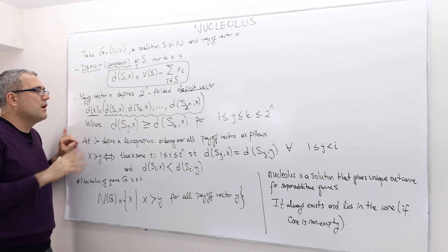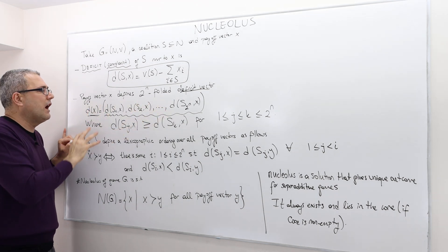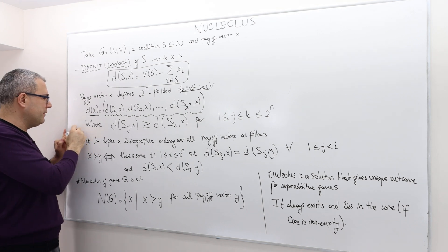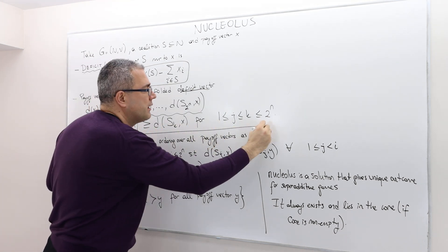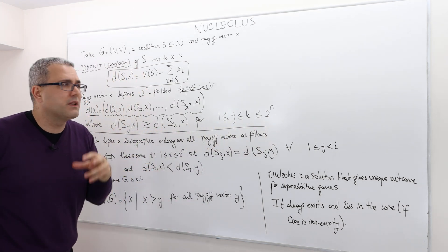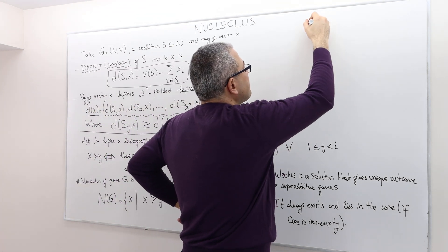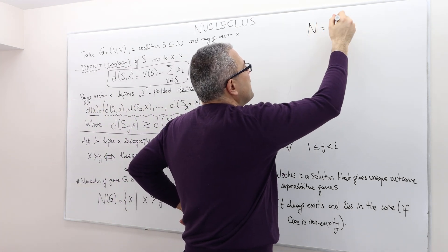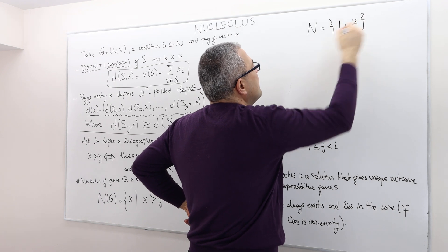So this is how we order the deficit vector, and this is very critical because I'm going to use this deficit vector to define a binary relation. If you're clear about how to construct, well, maybe let's pause here and work on some simple example.